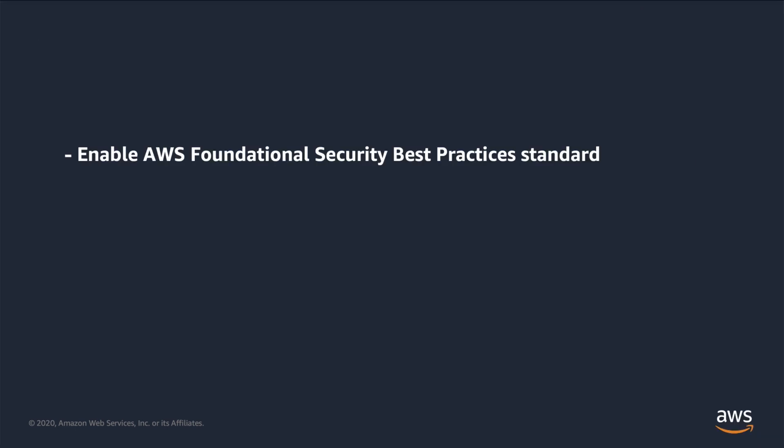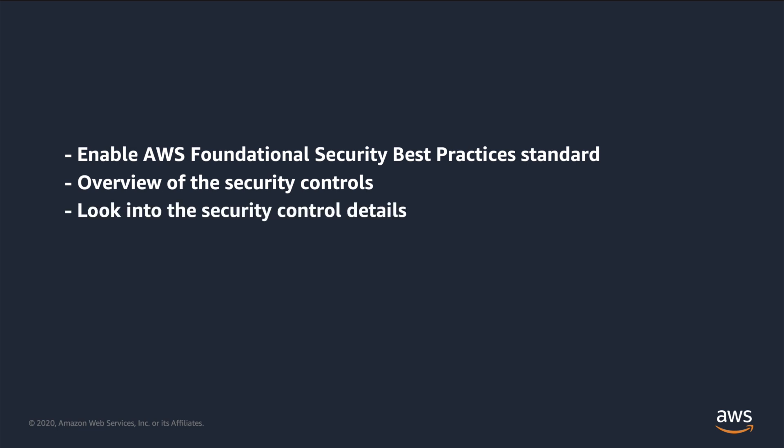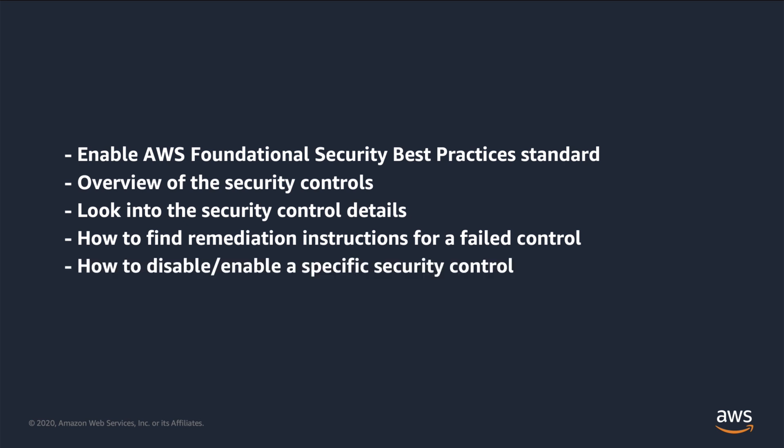We will show you how to enable AWS foundational security best practices, give an overview of the security controls available, take a look at the security control details, demonstrate how to locate remediation instructions for a failed control, and finally show you how to disable or enable a specific security control. Let's head over to the AWS console and get started.